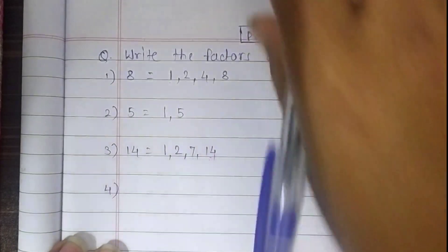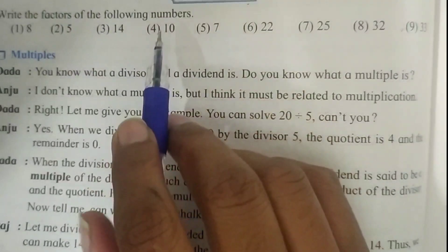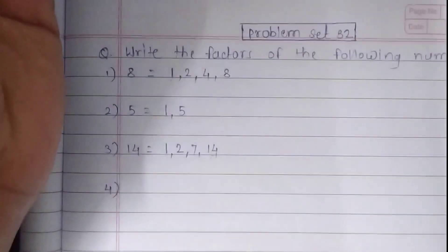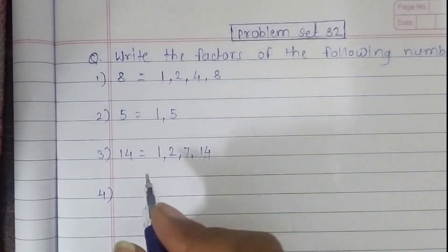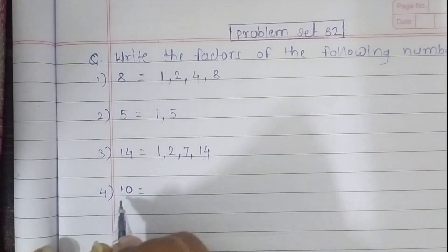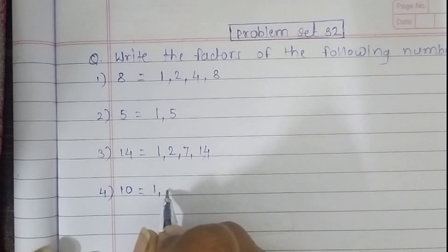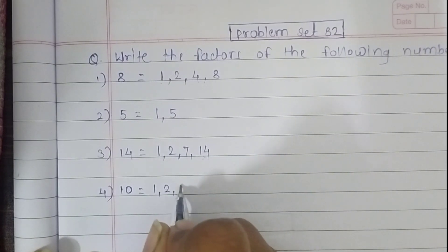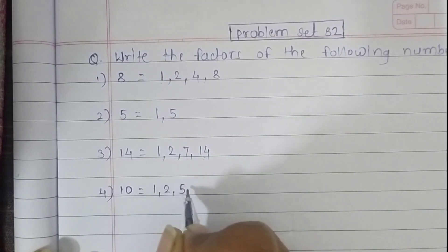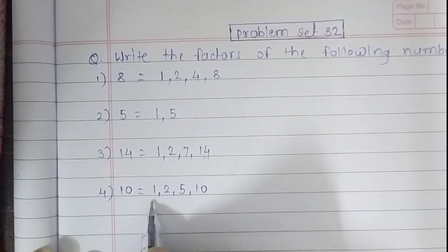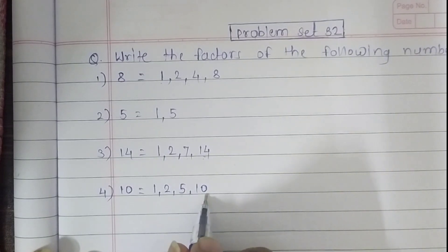The 4th question is 10. We have to write the factors of 10. The first factor of 10 is 1. Then it comes in the 2 times table — 2 fives are 10. It also comes in the 5 times table — 5 twos are 10. And finally, it comes in the 10 times table. So the factors of 10 are 1, 2, 5, and 10.